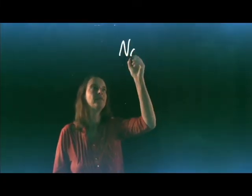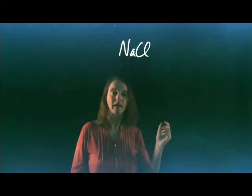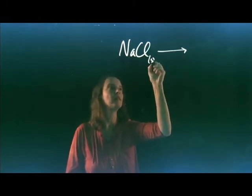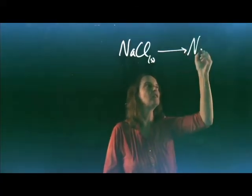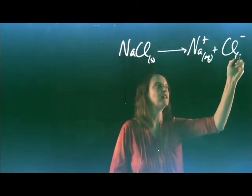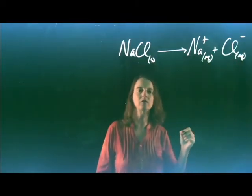Ions come from ionic compounds. For example, sodium chloride is a solid, but when you dissolve it in water, it ionizes to sodium ions and chloride ions. We use a little AQ to indicate that these are dissolved in solution.